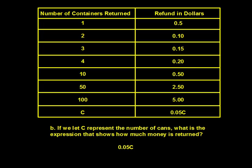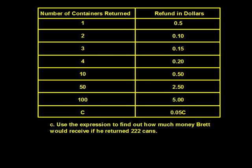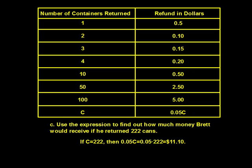Here's a completed table showing the number of cans up to C cans, and the refund values filled in on the right. Letter B: if we let C represent the number of cans, the expression that shows how much money is returned is five cents times C. Letter C: use the expression to find how much money Brett would receive if he returned 222 cans. If C is 222, then five cents times 222 gives a final answer of $11.10.